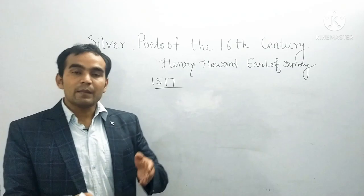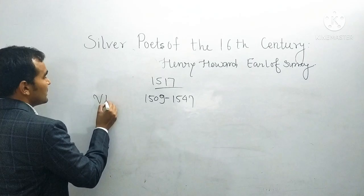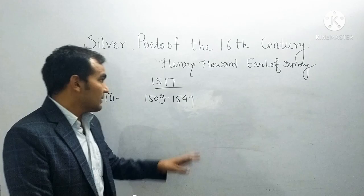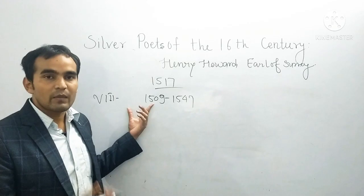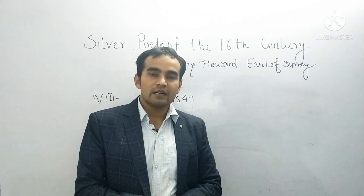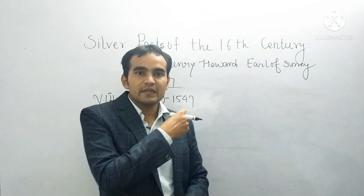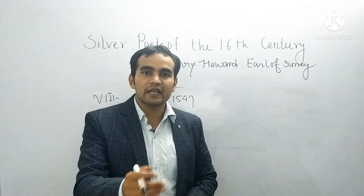His birth was in the year 1517. He belonged to a royal family. Like Sir Thomas Wyatt, he also joined the timeline of Henry VIII, that was the year 1509 to 1547. Henry Howard, Earl of Surrey, was a courtier in the court of Henry VIII.